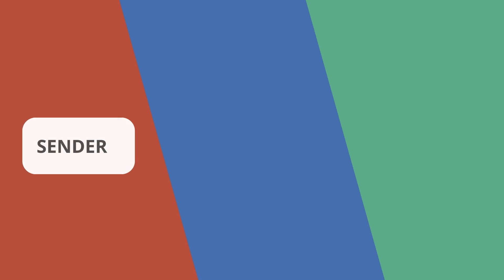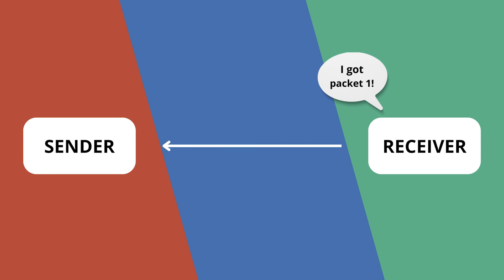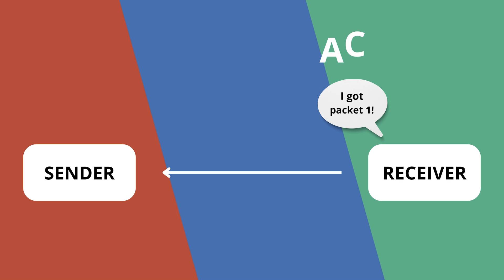When you send data over TCP, each packet gets assigned a number. The sender says here's packet one, and the receiver sends back an acknowledgement — or ACK for short — confirming it got packet one. There's a retry timer as well, so if the sender doesn't get back the ACK message when the timer runs out, the sender will send the packet again, retrying over and over up to some predefined limit.